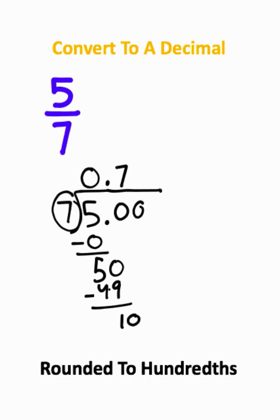Now I'll bring down another 0. Can 7 divide into 10? Well, yes, it can. And it can go in one time. 7 times 1 is 7. And subtracting these, you'll get 3.